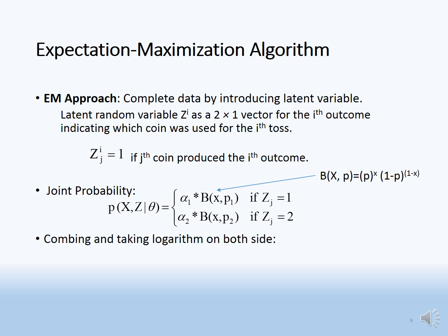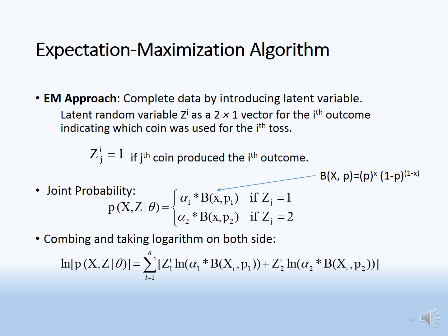By combining and taking the logarithm of both sides, we get: log P(x, z given theta) = summation over i from 1 to n of z_{1i} times log of alpha1 times Bernoulli(x_i, p1), plus z_{2i} times log of alpha2 times Bernoulli(x_i, p2).